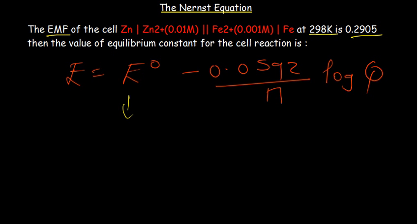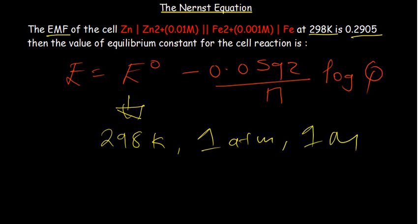For something to be standard, for us to have the standard cell potential, the conditions are 298 Kelvin, 1 ATM, and 1 molar concentrations of the reactants and the products. In this case, if you look at the concentrations that we have, they are not standard. So it's non-standard cell potential.